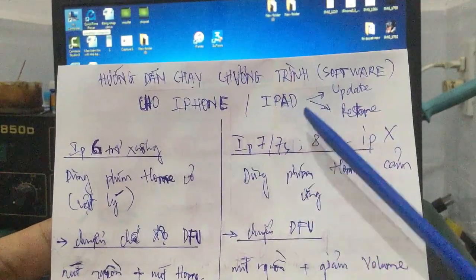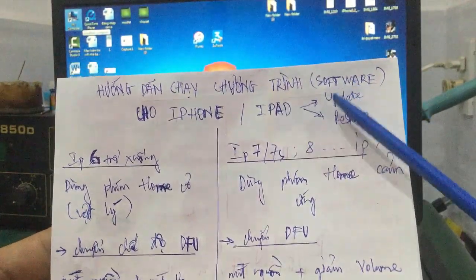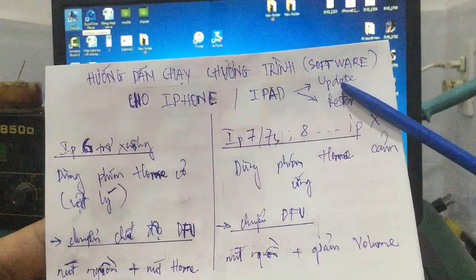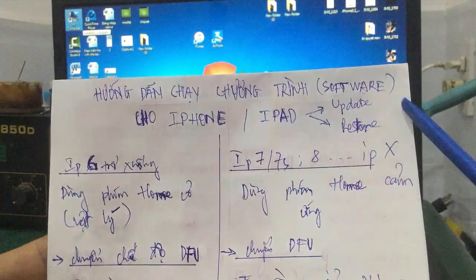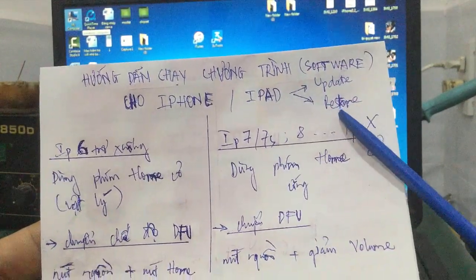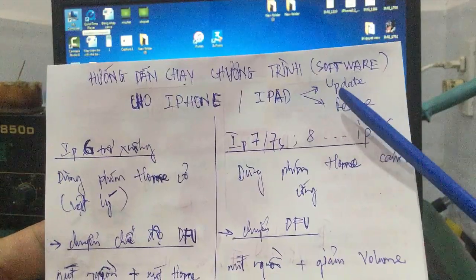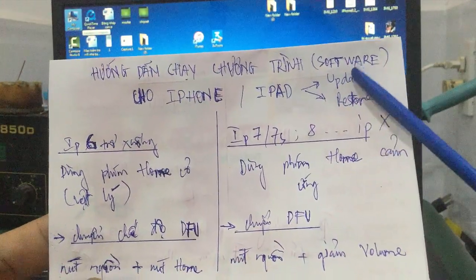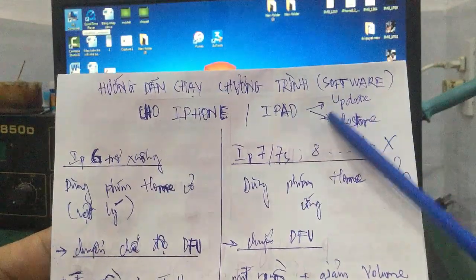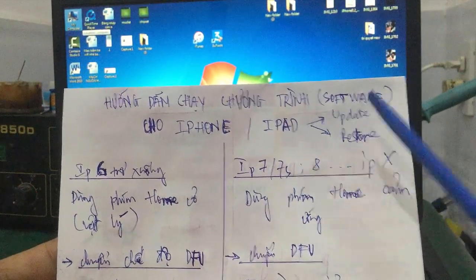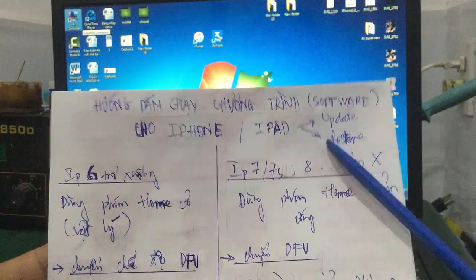iPhone iPad có 2 phần: update là nâng cấp chương trình lên - ví dụ các bạn đang chạy version cũ muốn nâng cấp lên - hoặc restore lại. Trường hợp các bạn bị treo táo, treo cắp đĩa, thì dùng cách này để restore - khôi phục lại nguyên trạng như nhà sản xuất lúc đầu.